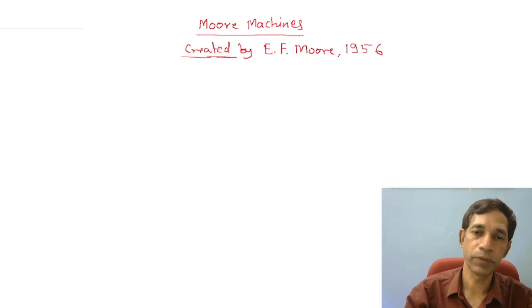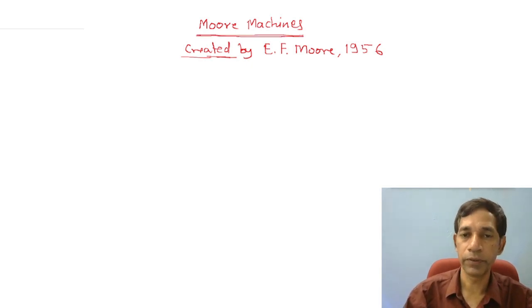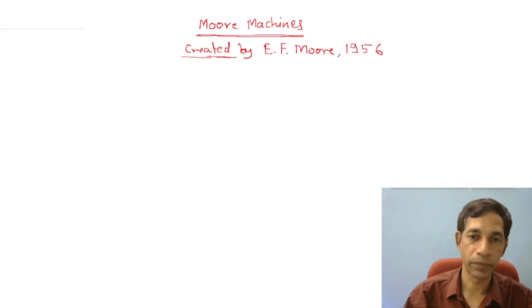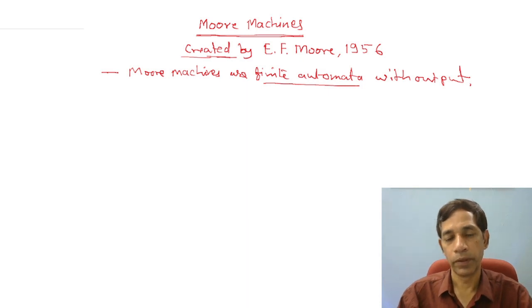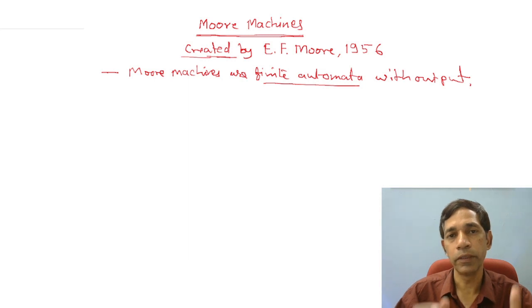We are going to discuss Mealy machines. Mealy machines were created by E.F. Mealy in 1956. These machines are finite automata with output. We have seen the discussion of finite automata, and the basic intuition is to design the mathematical model of a computer.